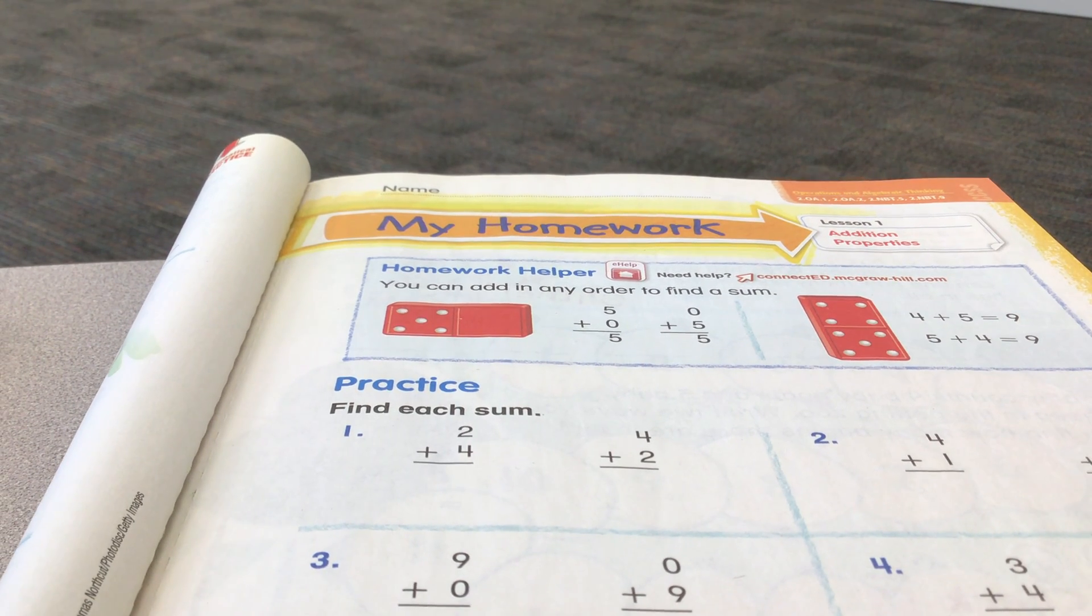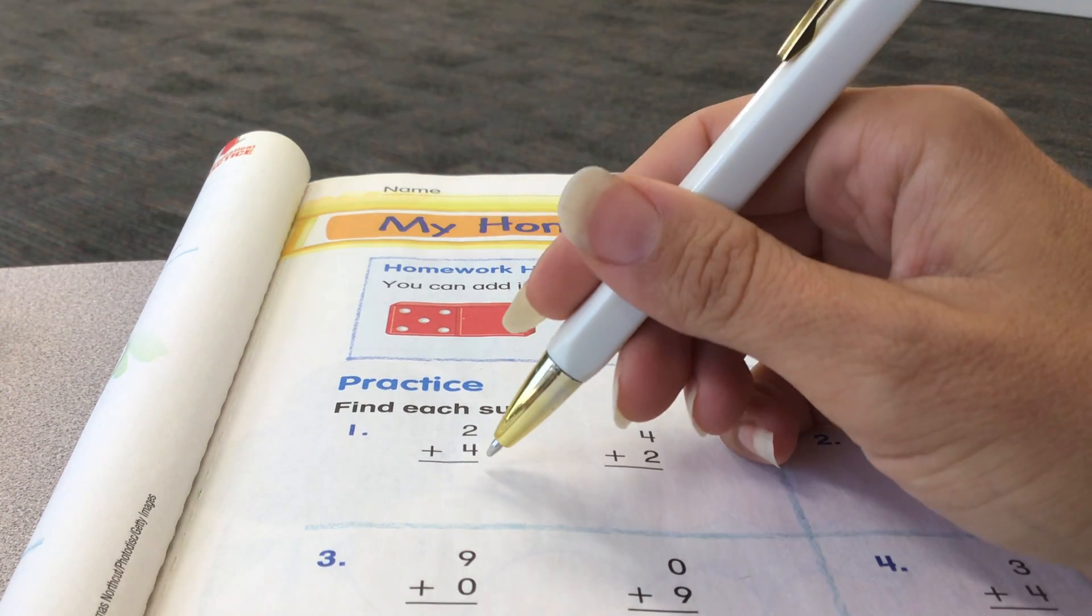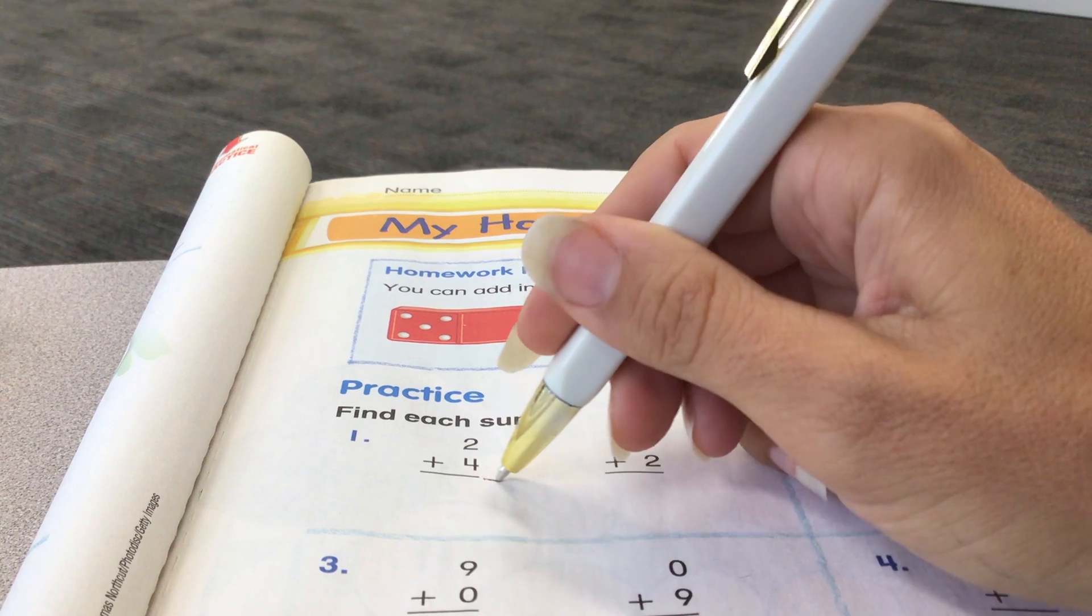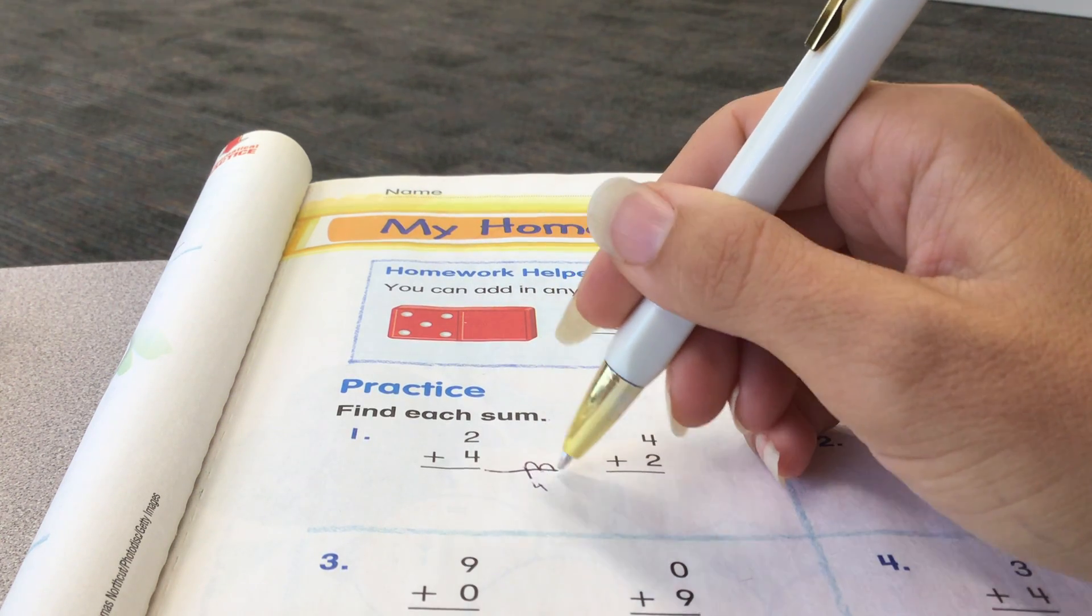Find each sum, 2 plus 4. So you can draw a number line. And remember, you'd start with the larger addend. You could start with 4 and then do 2 jumps and get 4, 5, 6.